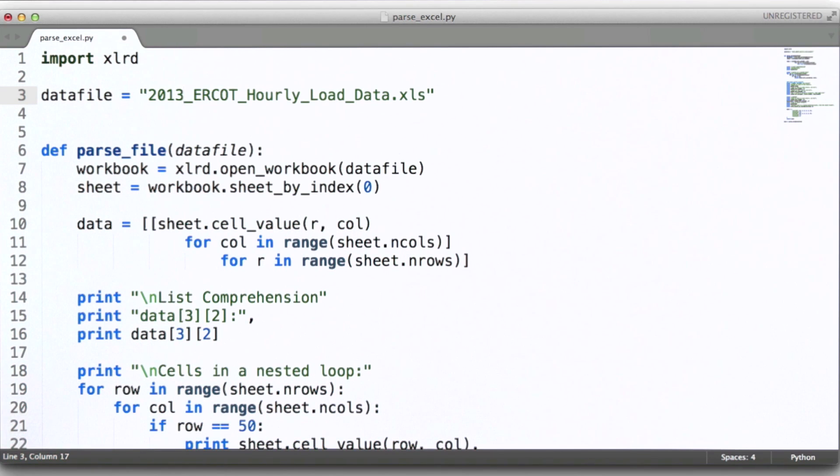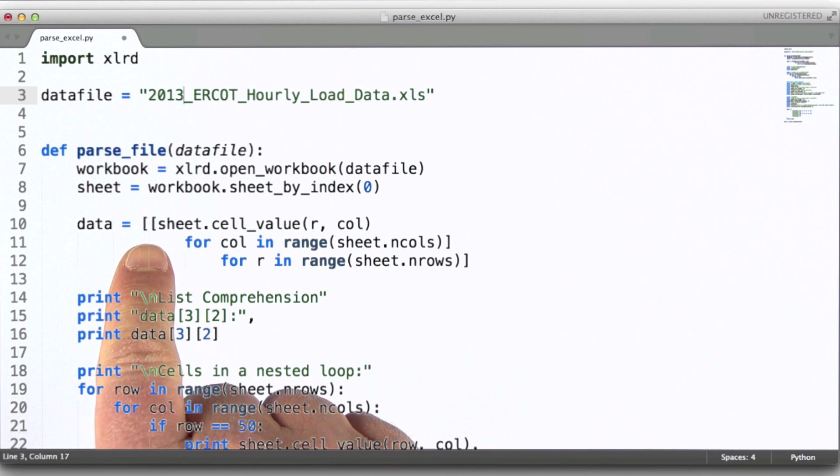Here's an example of doing a list comprehension. And in this case what we're doing is essentially looping through all of the rows and columns, and reading all of that data into a Python list.